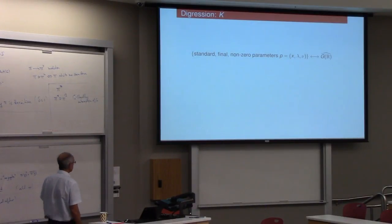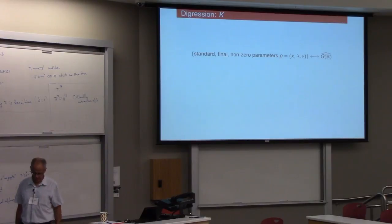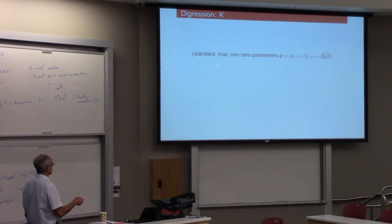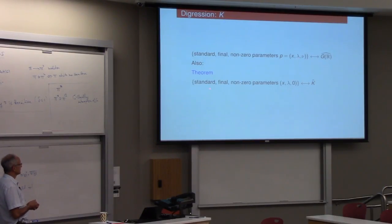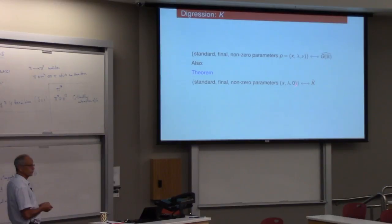So, this is just a very brief digression, just because it's a convenient place to say it, and it comes up in some of the later talks. So, this is just what I just said, the standard quantum non-zero parameters parametrizes the irreducible and mystical representations of G. And it's really a beautiful fact that if you simply take these parameters, and if you take the collection of parameters x-lapped into zero, where nu is zero, if you take this collection of standard final non-zero parameters, that parametrizes K-hat, irreducible representations of K.